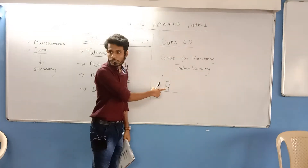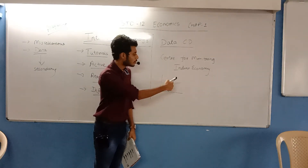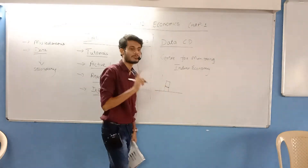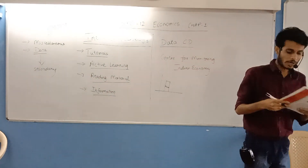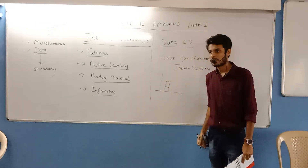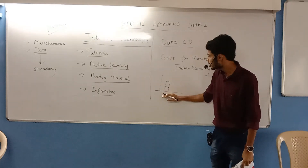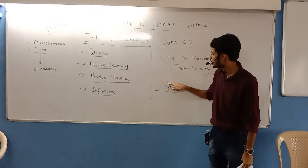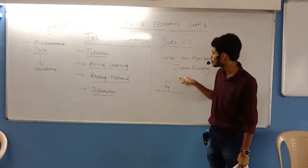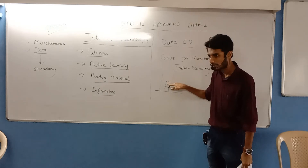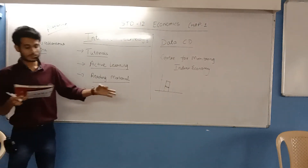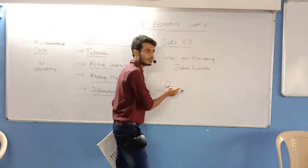First, the width of the bars does not represent anything, and all bars should have equal width. Second, the height of each bar should be proportional to the values they are representing. For example, if in Standard 12 there are 80 students, the bar should be taller than a bar representing fewer students.